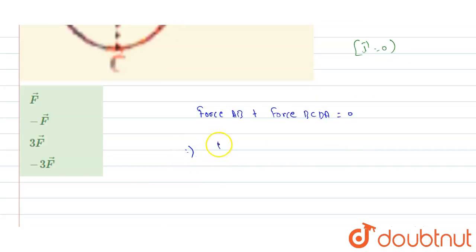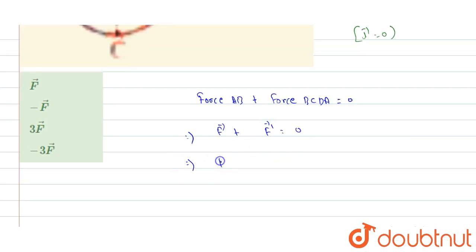But the force on AB is given as F vector. So let the force on BCDA be F' vector. Since F + F' = 0, this implies F' equals -F vector. Therefore, the force on BCDA is -F vector, and option 2 is the correct answer.